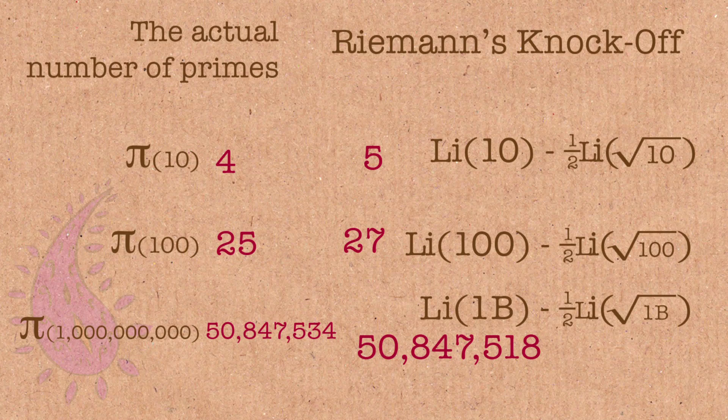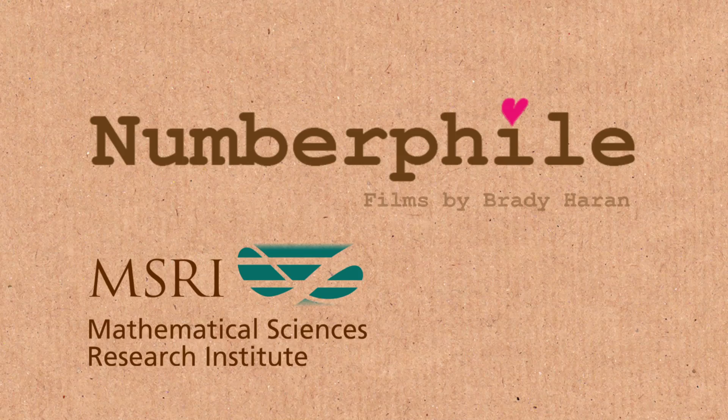What Riemann did was actually a much longer expression — a much longer formula — so this continued, there were more terms, which got smaller and smaller. That error — that little bit that it's off — he had an expression for that as well. That expression is what the Riemann hypothesis is all about. If we solve the Riemann hypothesis, we know what that error is, or we have a better understanding of how far off our approximation is, which is why it's an important problem. It helps us count primes.